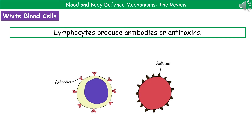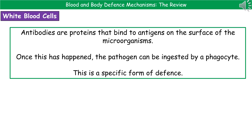The second type of white blood cell we need to know about are the lymphocytes, and these produce one of two types of chemical: either antibodies or antitoxins. On the surface of our pathogen, we have little protein spikes called antigens, and they have a specific shape that corresponds to the antibody on our lymphocyte. The antibodies produced by the lymphocyte are specific to a particular antigen. An antibody is a protein produced by our lymphocyte that binds to antigens on the surface of the microorganism. Once that's occurred, the pathogen can then be ingested by our phagocyte — this is a specific form of defense, because those antibodies are specific to a particular antigen.